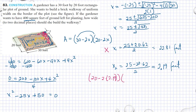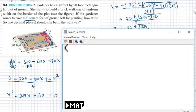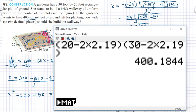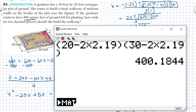Let's check if we can get 400: 20 minus 2 times 2.19 multiplied by 30 minus 2 times 2.19. Maybe it's better to do that with my calculator. 20 minus 2 times 2.19, then 30 minus 2 times 2.19, gives us 400.1844. Because we rounded it off to two decimal places, it's almost 400.